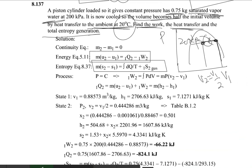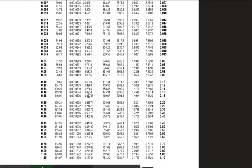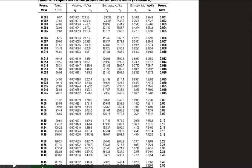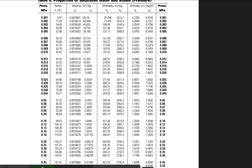Since this is a constant pressure process, work done equals P times the change in volume. First, we go to the saturated steam table at 200 kPa (0.2 MPa). From there we get the specific volume V_g, enthalpy h_g, and entropy s_g for the saturated vapor state at 200 kPa. These are our state 1 values.